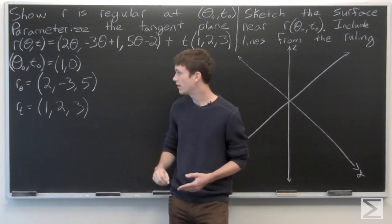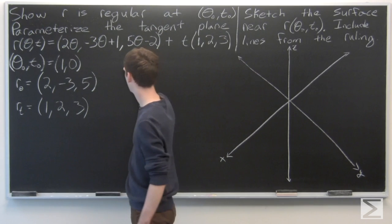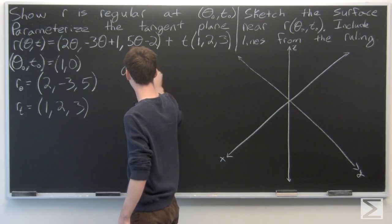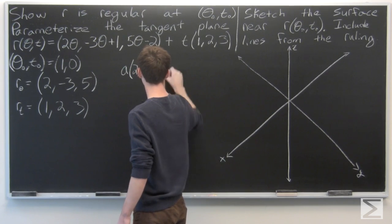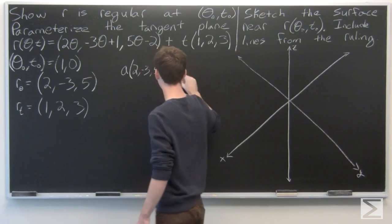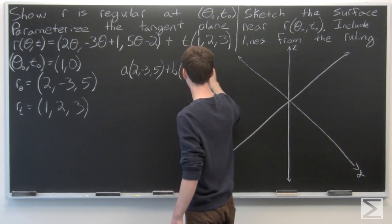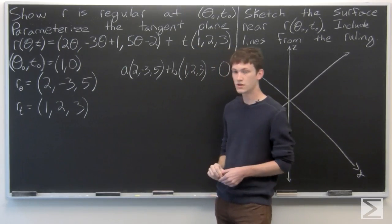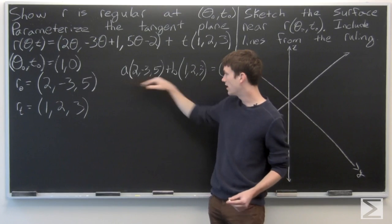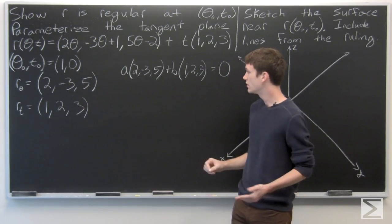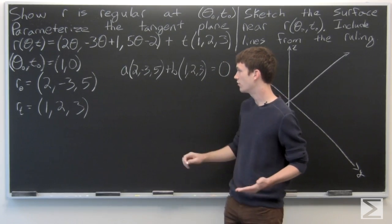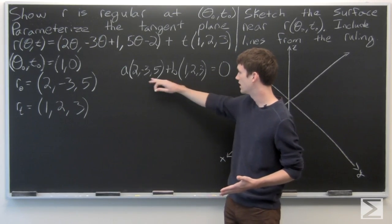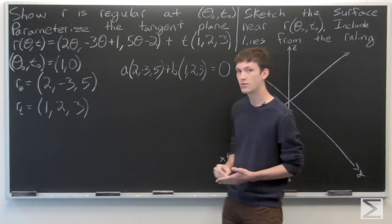Now we know that if r is regular, then the only solution to the equation a·(∂r/∂θ) + b·(∂r/∂t) = 0 is when both a and b are 0. So we'll set each of the components equal to 0 and see what we get.